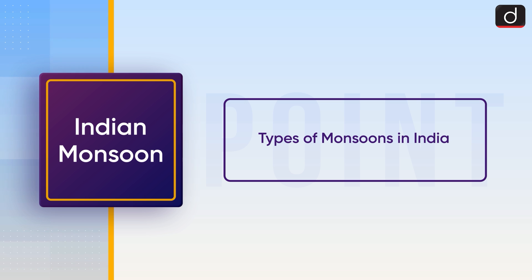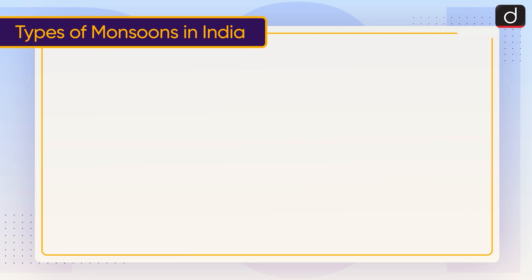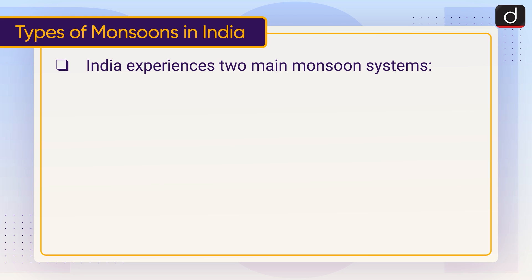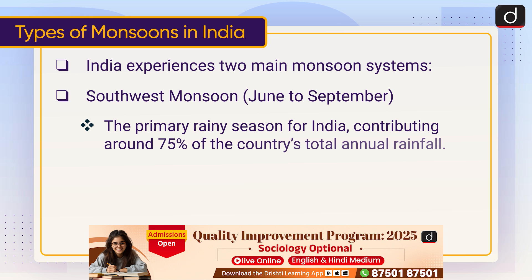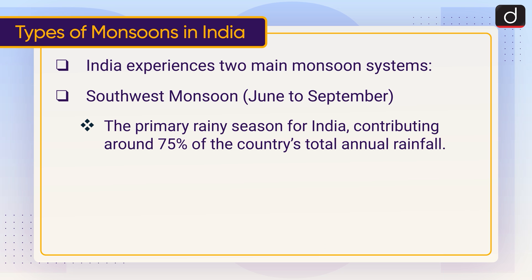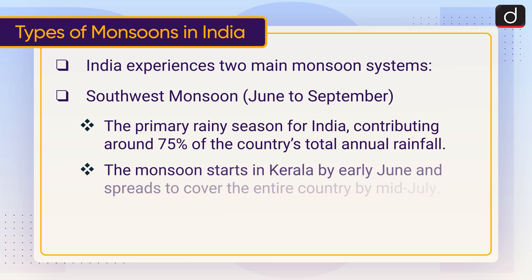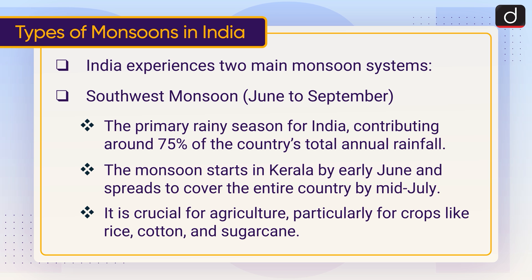Now let's talk about types of monsoons in India. India experiences two main monsoon systems. The Southwest monsoon, from June to September, is the primary rainy season for India, contributing around 75% of the country's total annual rainfall. The monsoon starts in Kerala by early June and spreads to cover the entire country by mid-July. It is crucial for agriculture, particularly for crops like rice, cotton and sugarcane.